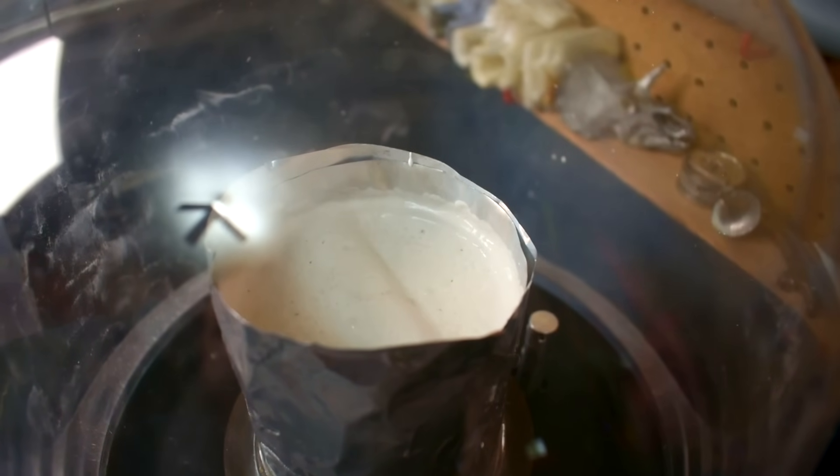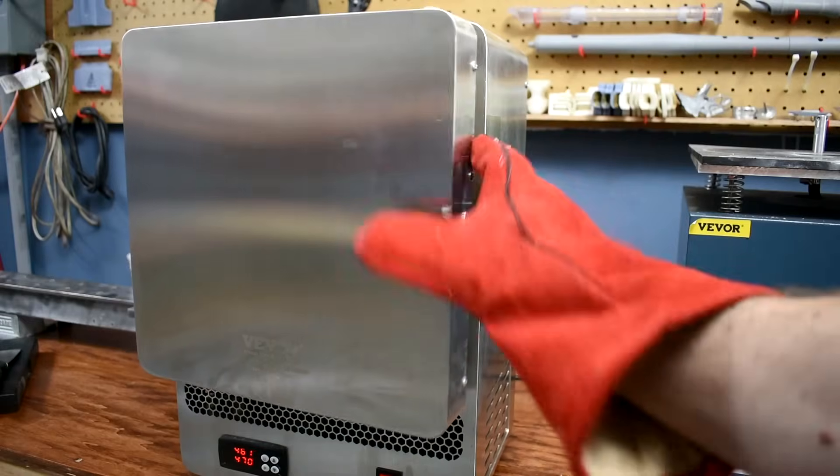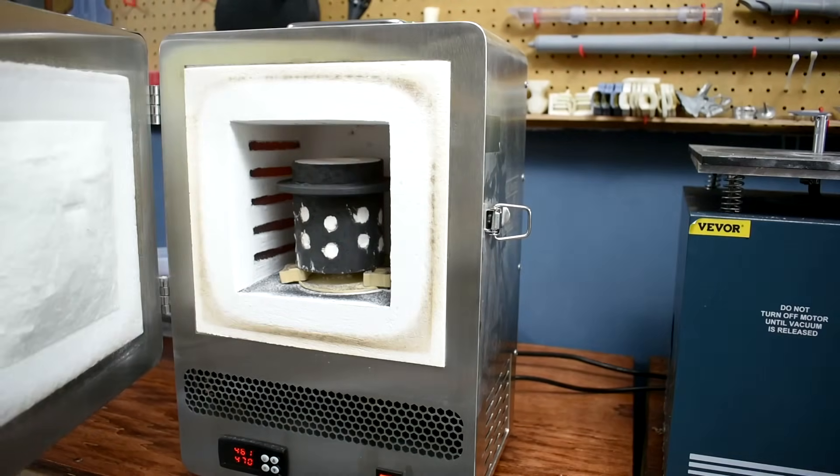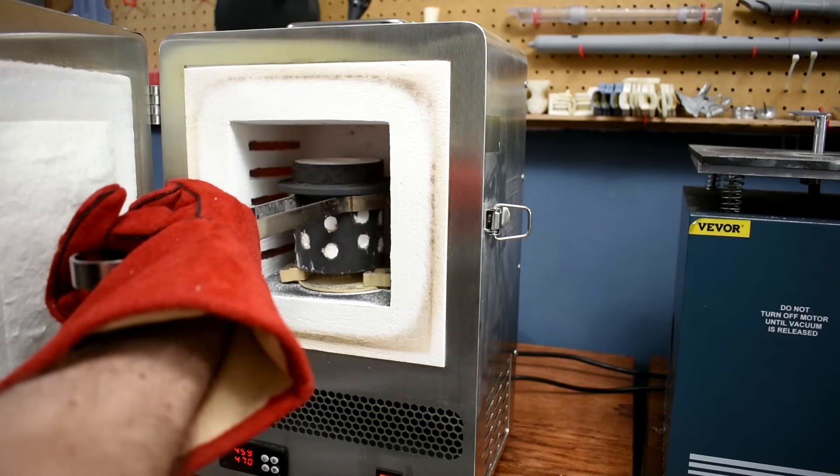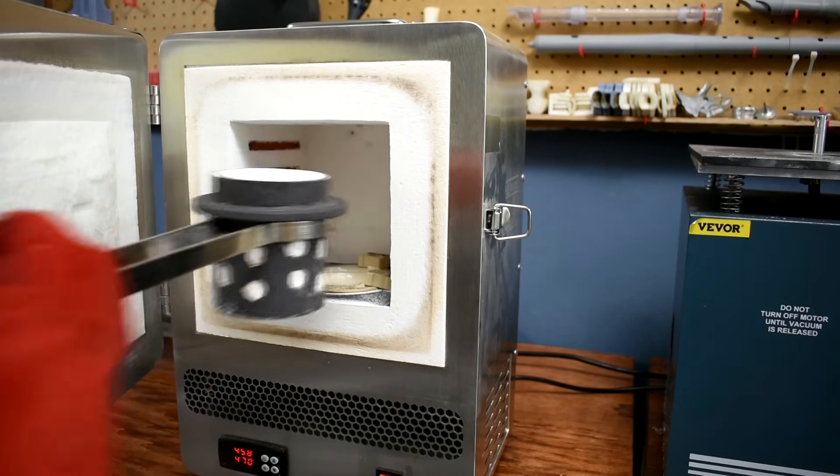Anyways, the front opening makes it really easy to get a flask out of there. You can easily fit the tongs in there, lift it out clean. The one I built has a top lid. That's a pain. You want the front lid.